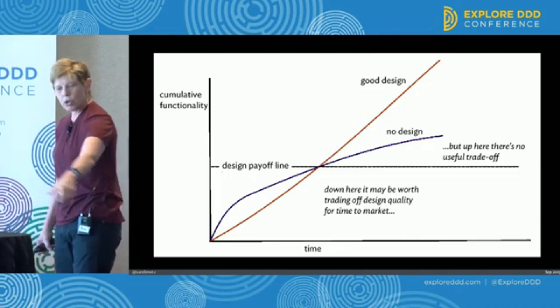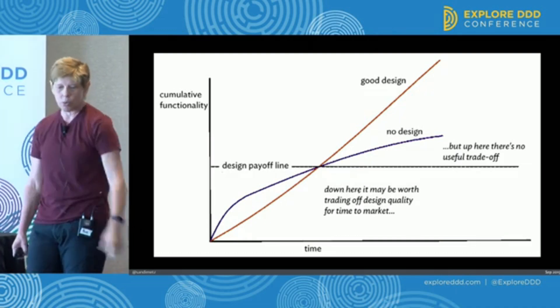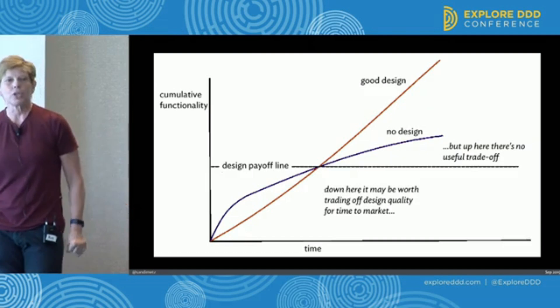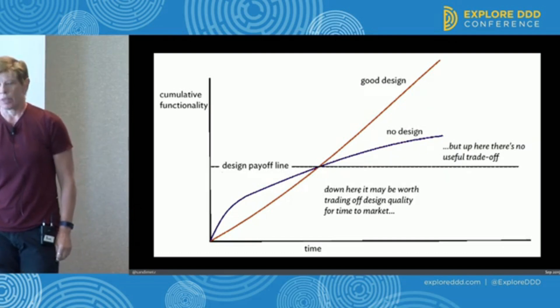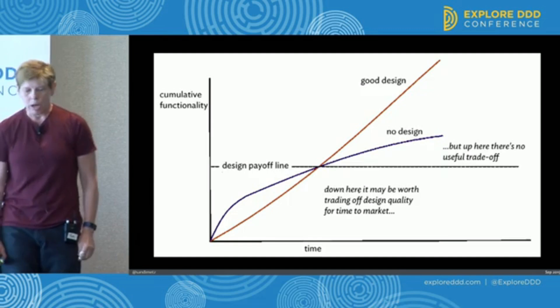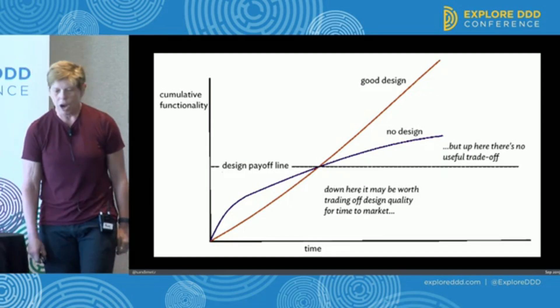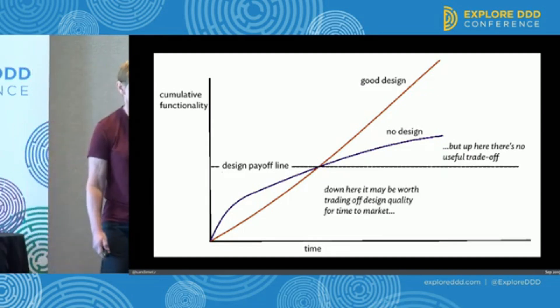He draws two lines on this chart. That orange-ish one is how much you get done over time if you do design. The blue line is how much you get done over time if you don't do design.